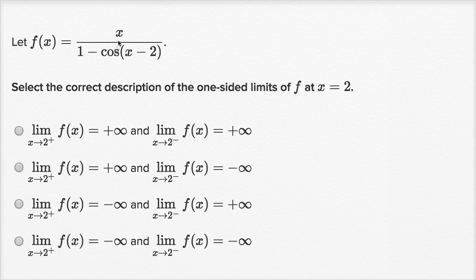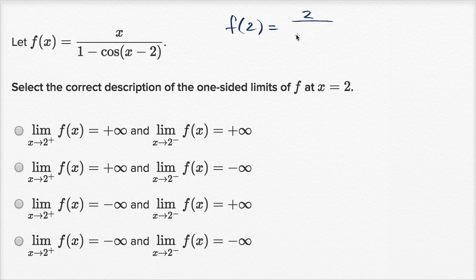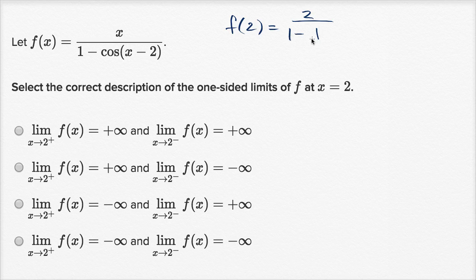We're told that f(x) is equal to x over one minus cosine of (x minus 2). They ask us to select the correct description of the one-sided limits of f at x equals 2. If we try to evaluate f(2), we get 2 over 1 minus cosine of (2 minus 2), which is cosine of zero, and cosine of zero is just one. So one minus one is zero — the function is not defined at x equals 2, which is why it's interesting to find the one-sided limits.